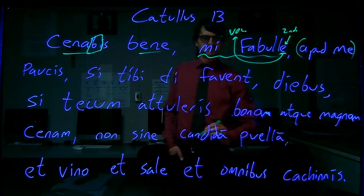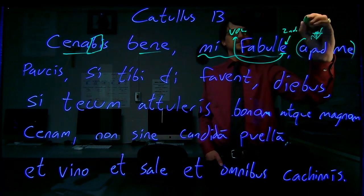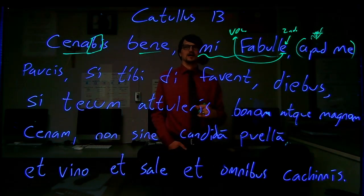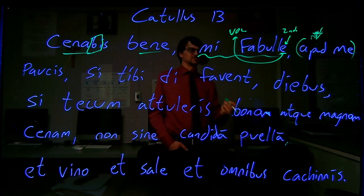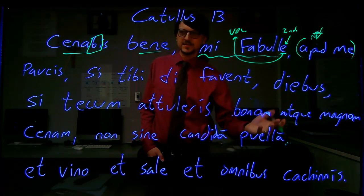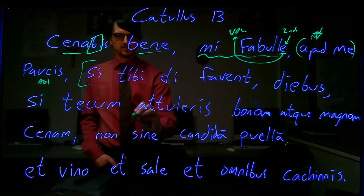So it's like my dear Fabuleus, and then you get apud me. Now apud me is a nice preposition. If you look it up, you might see it means like near, but in this case, it kind of means the equivalent of like a French chez, like at my house. So you will dine well, my Fabuleus, at my house.